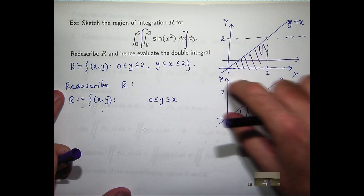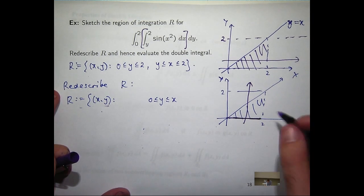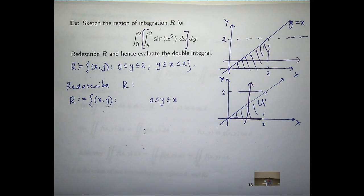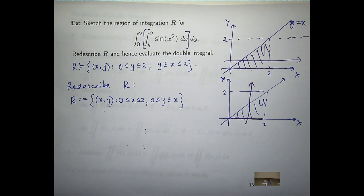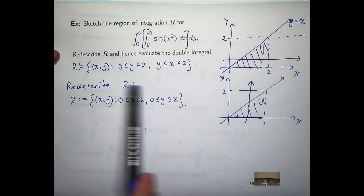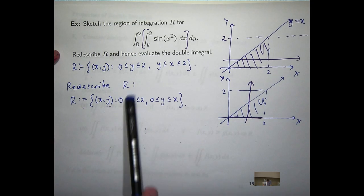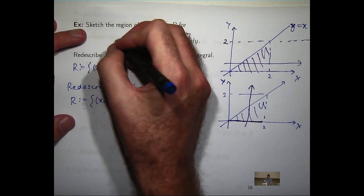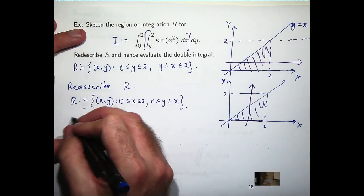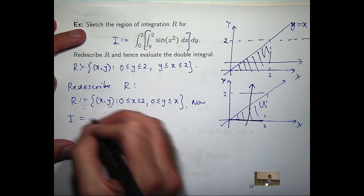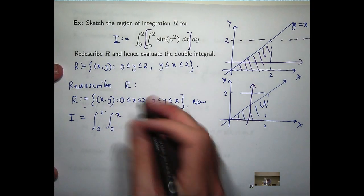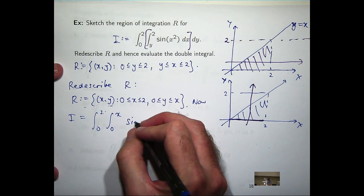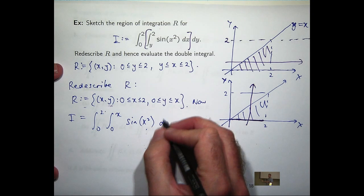And what's the interval for x? If I just move this line either way, I can cover the region just by going between 0 and 2. So they're the bounds on x. Now what I can do is evaluate this integral by using these upper and lower limits of integration. So it's going to be from 0 to 2 on the outside and from 0 to x on the inside. I'm still integrating the same function and I'm swapping the differentials around.